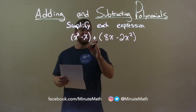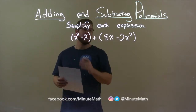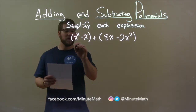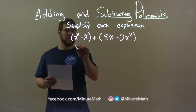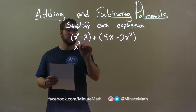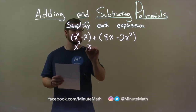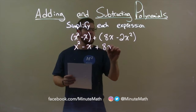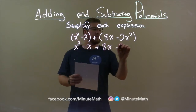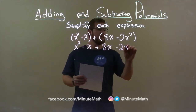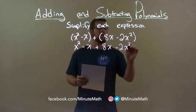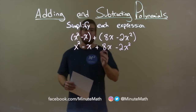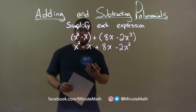With addition here, the parentheses are not needed. So I can rewrite this to be x squared minus x plus 8x minus 2x squared. Now I want to combine my like terms.